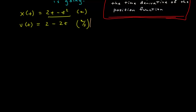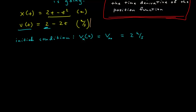Let's introduce some terminology similar to what we did with the position function. The initial condition of the velocity function is defined as the velocity when time equals zero. If I'm along the x-axis I give it a subscript x, so I might call it v_x0 — read as 'v sub x naught.' For this function, that equals 2 meters per second, since plugging t = 0 gives a value of 2.